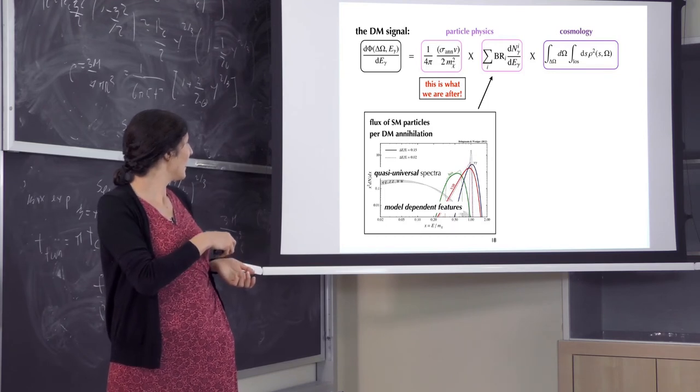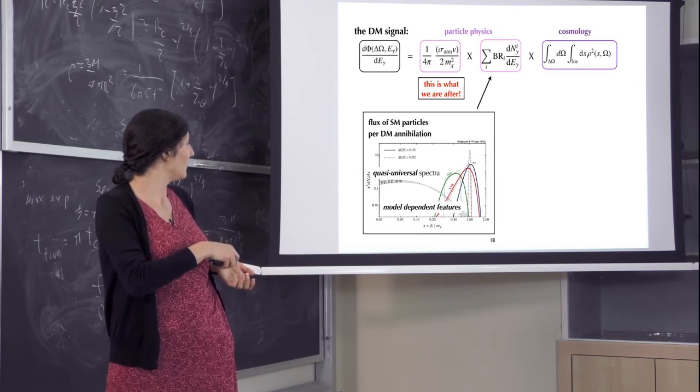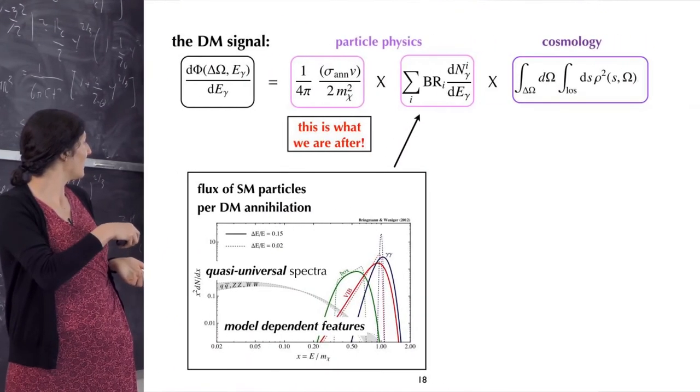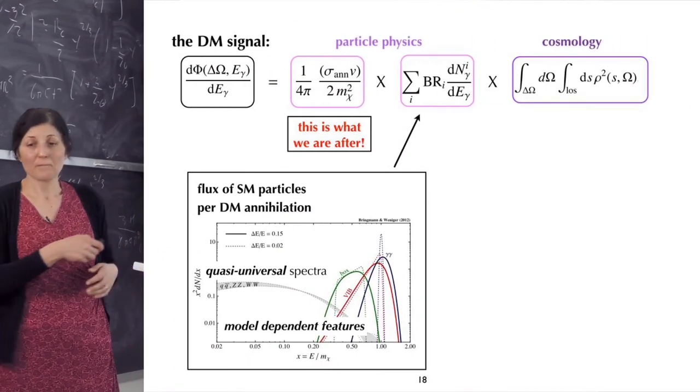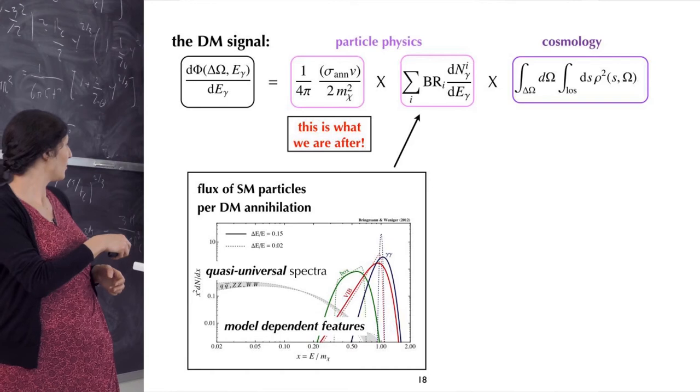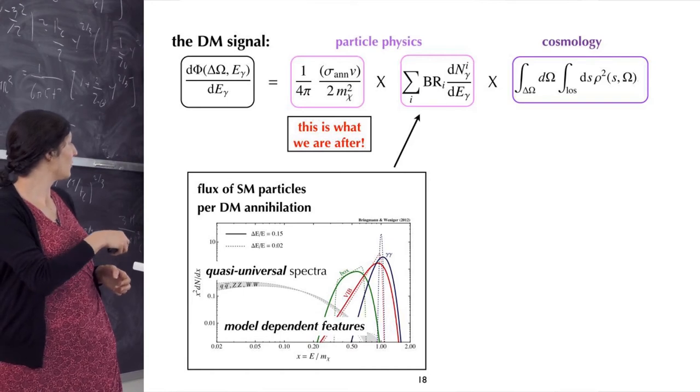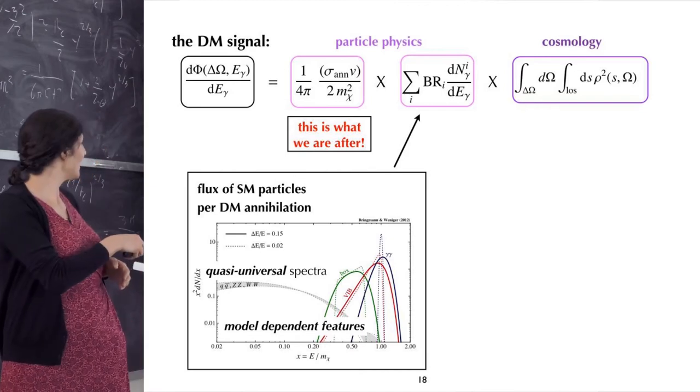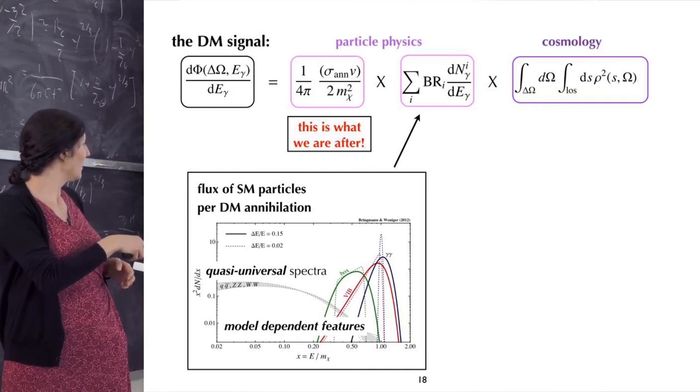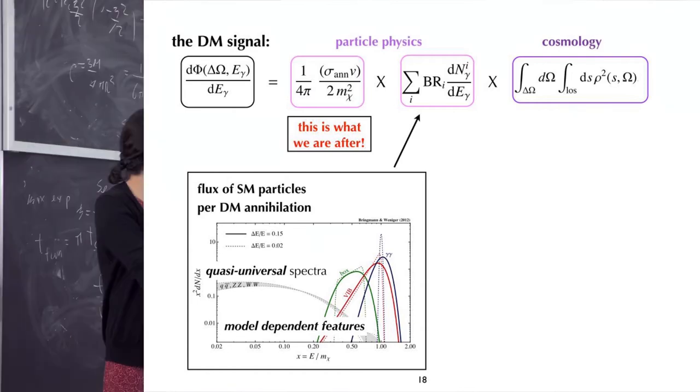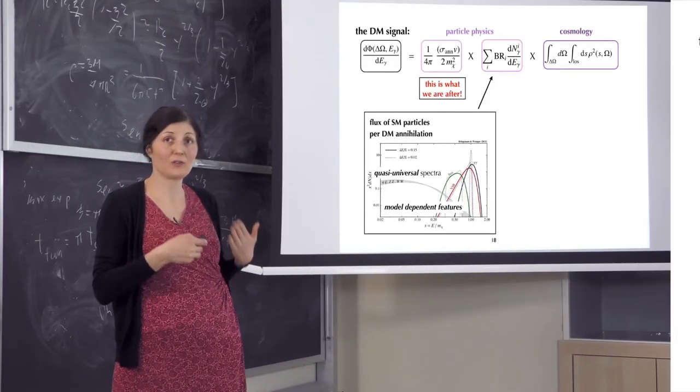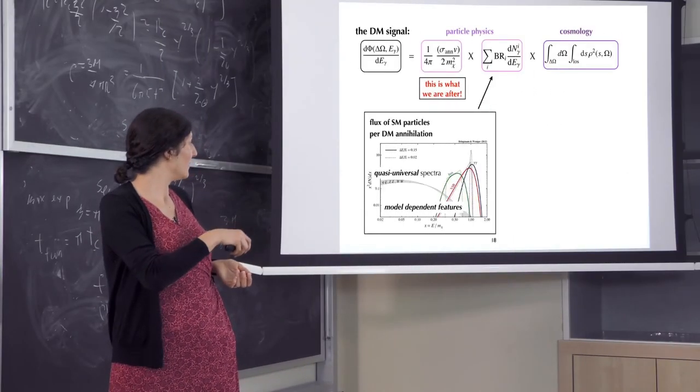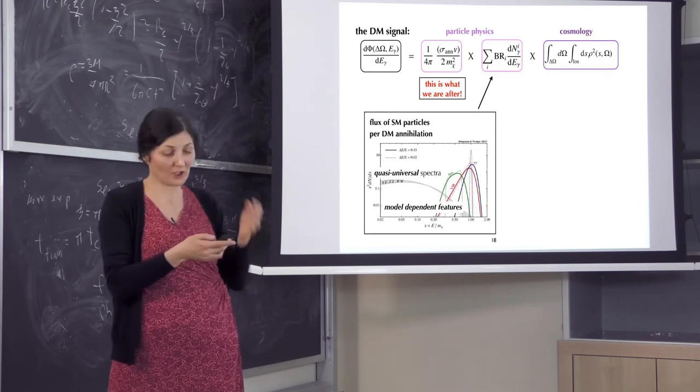This is the spectrum: number of photons in a given energy bin versus energy for different annihilation channels. You see that if a particle annihilates to quarks or gauge bosons, the spectrum is more or less smooth and more or less similar for every channel. So basically what we look for is something like this spectrum. In particular particle physics models, one could have gamma-ray lines or some very hard spectra that I will not talk about here.